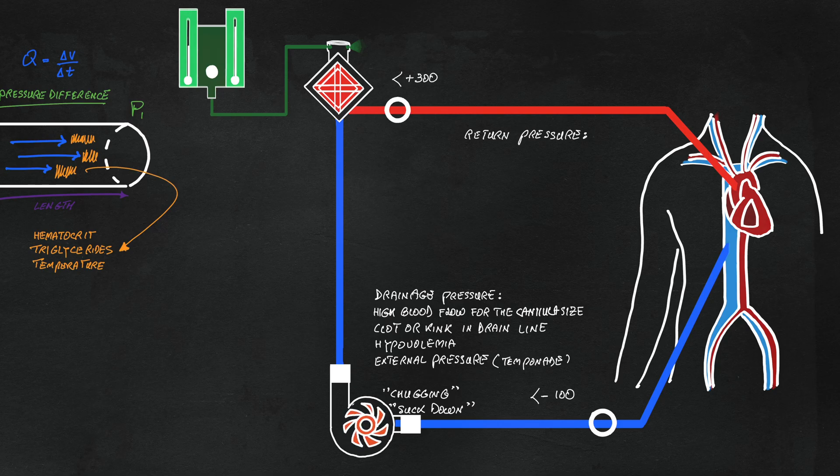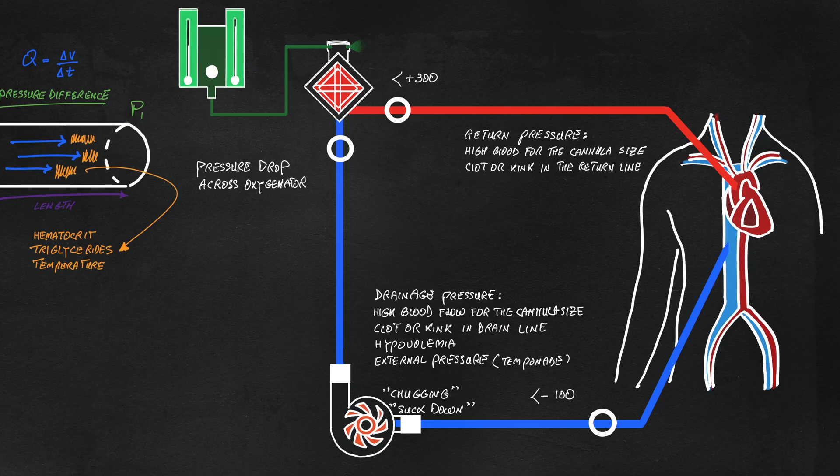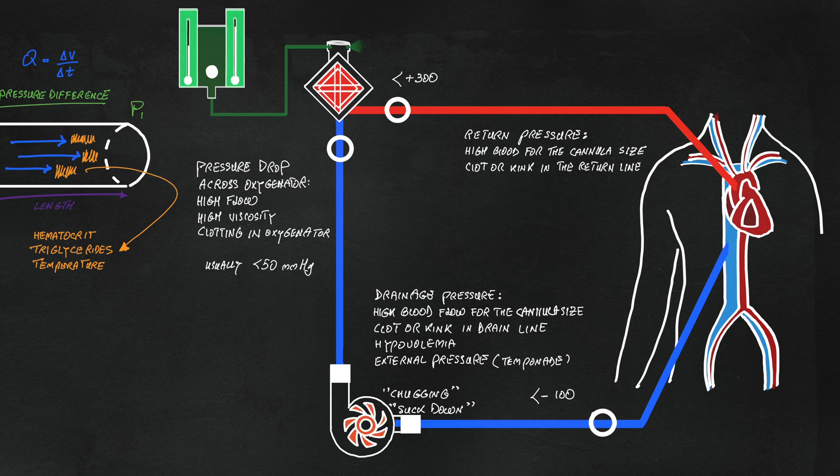Return pressure will be higher with high blood flow relative to the tube size, or if there is a kink or flow impediment. Another clinically important parameter is the pressure drop across the oxygenator, which could be due to high viscosity or clotting.